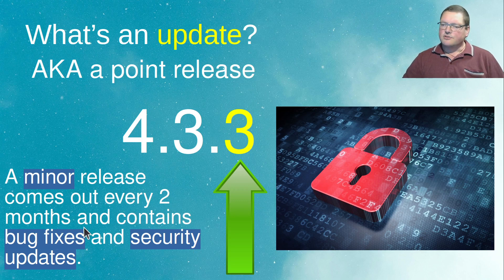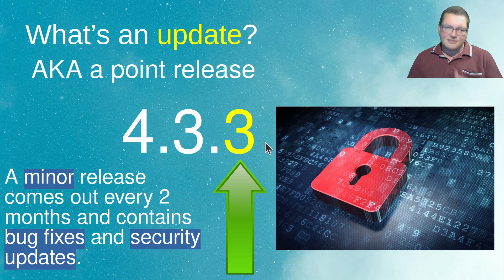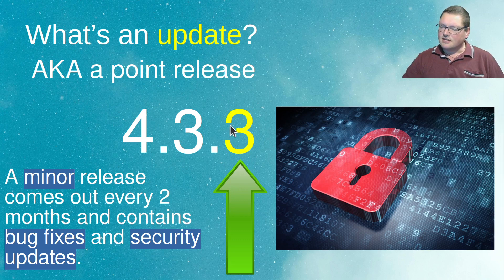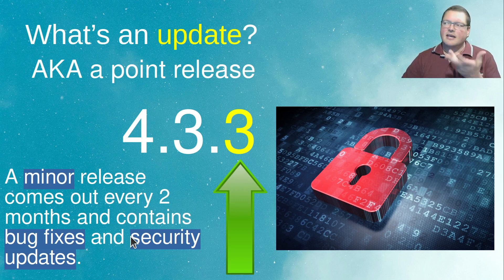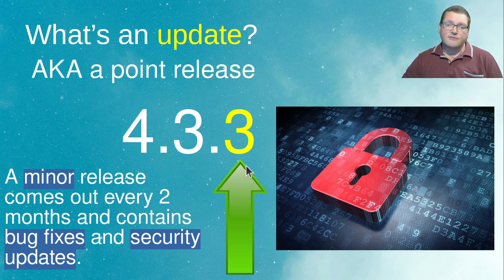Updates come out about every two months. There's also a plus release in between the point releases — if you do a git pull each week, you're going to get some updates. This is what I would consider an update. The big difference is that it usually contains bug fixes and security updates, but it doesn't contain new features and the interface doesn't change. It's going to look and feel the same, just keep it secure and up to date. If something's broken, it's going to get fixed in one of these updates.